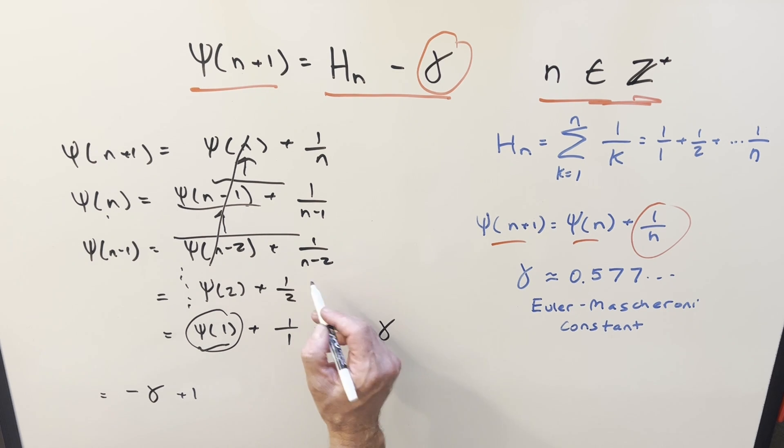So for this term, this is going to be 1 over 2. Above this is going to be 1 over 3. Eventually, we're going to get to this one, which is going to be 1 over n minus 2, 1 over n minus 1, and eventually all the way to 1 over n.